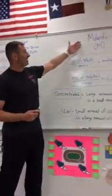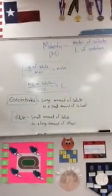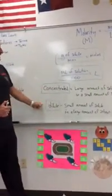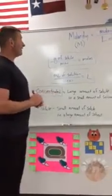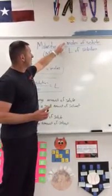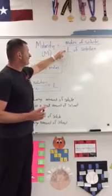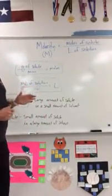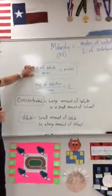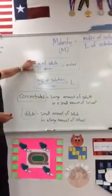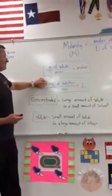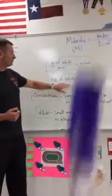Molarity is the measure of that. If I have something with a high molarity, that means it's very concentrated. If I have something with a low molarity, it is very dilute. The formula is: molarity, which is represented by a capital M, equals moles of solute over liters of solution. 90% of the time these problems will give you grams of solute, so you have to convert to moles by dividing grams by the molar mass. They'll also often give you milliliters, so divide by 1,000 to get liters.